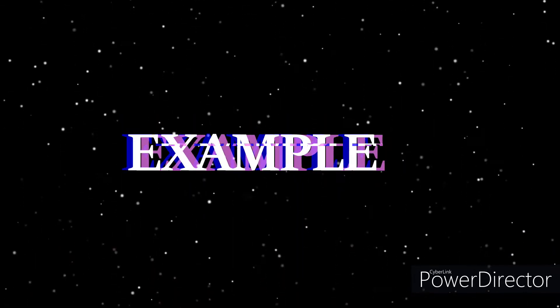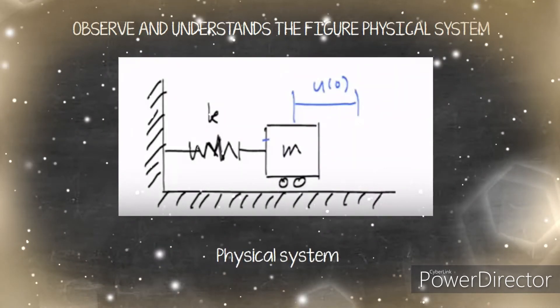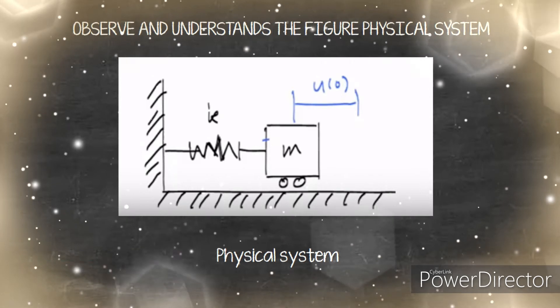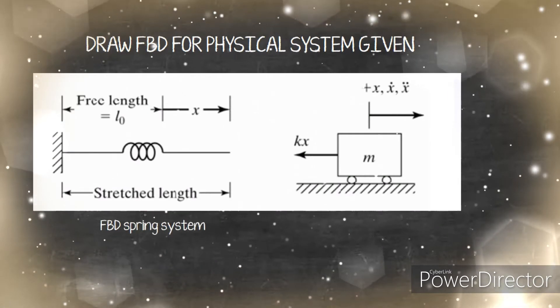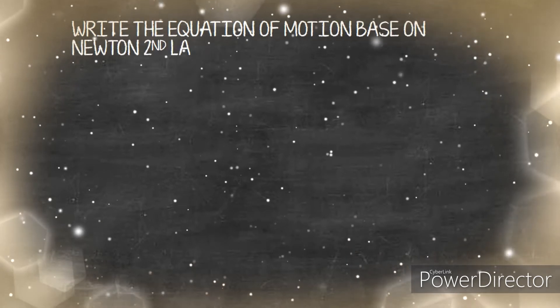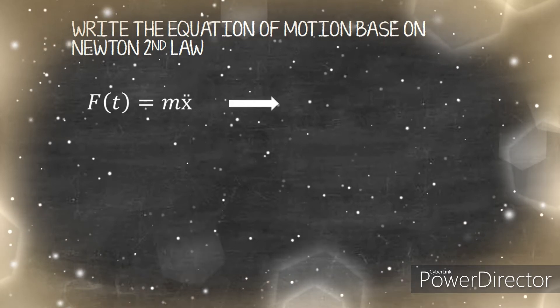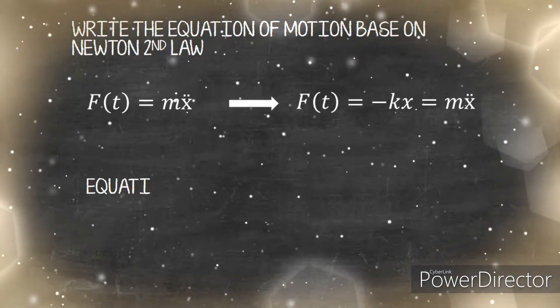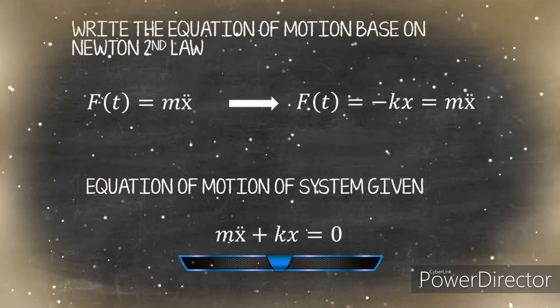Here I will show an example of how to find the equation of motion. First, understand and observe the figure given. From the video, the spring is attached to a body mass, so this is a linear motion system. We draw the free body diagram for the spring-mass system, giving two FBDs. Using Newton's Second Law, for the spring F = kx, and for the body mass F = mẍ. Combining and rearranging gives the equation of motion.